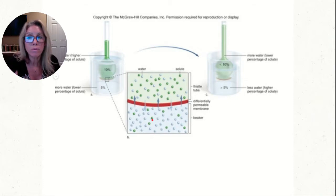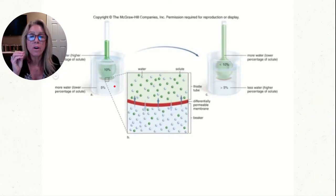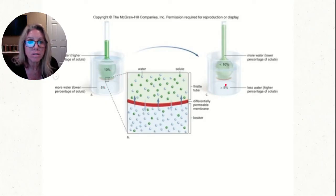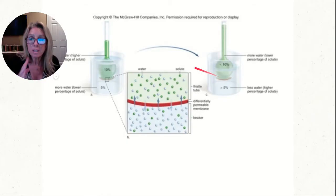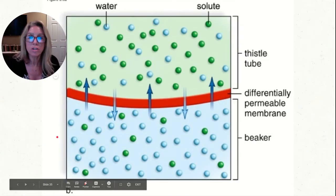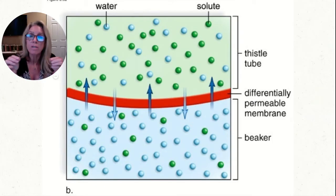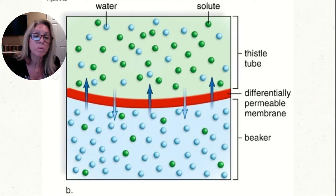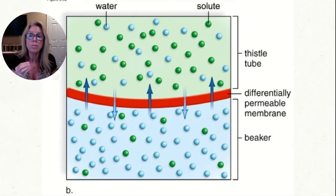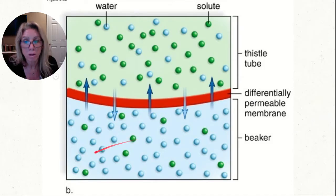This is the thistle tube — there's a 10% solution in the thistle tube inside a beaker with a 5% solution. At the bottom of the thistle tube is a membrane separating the solutions. The 5% solution has less solute in it, so water is going to flow into the thistle tube. You can see the level of solution rising and appearing more dilute as it continues to move in. In lab, we use dialysis tubing — a membrane with tiny pores that allows molecules to cross only if they are small enough.